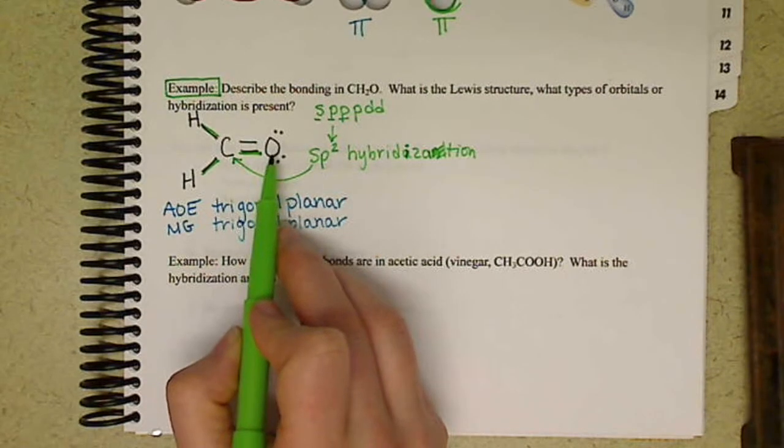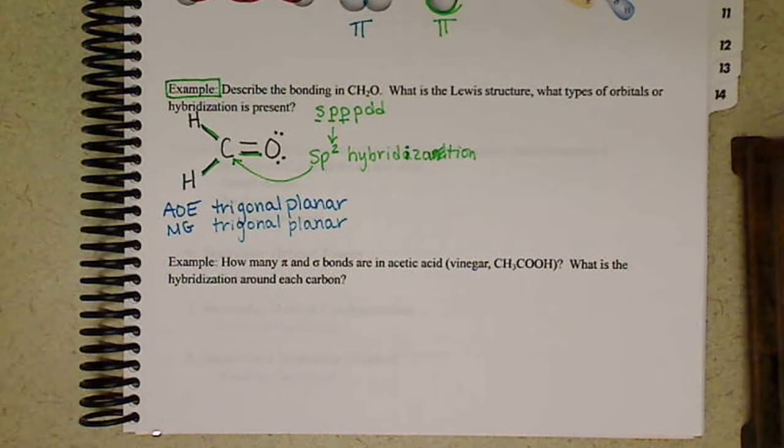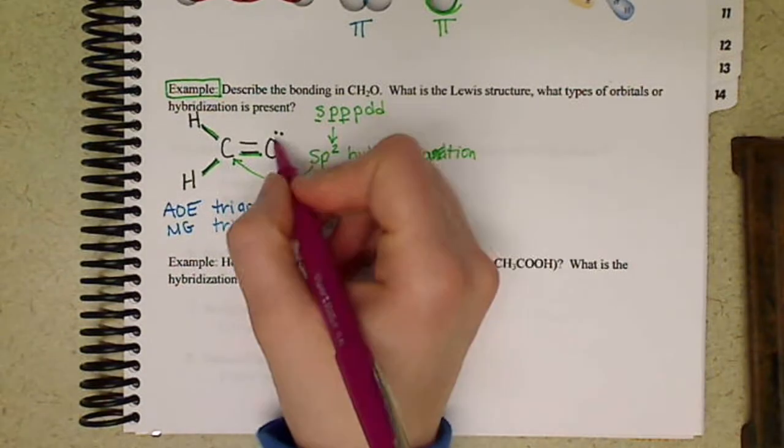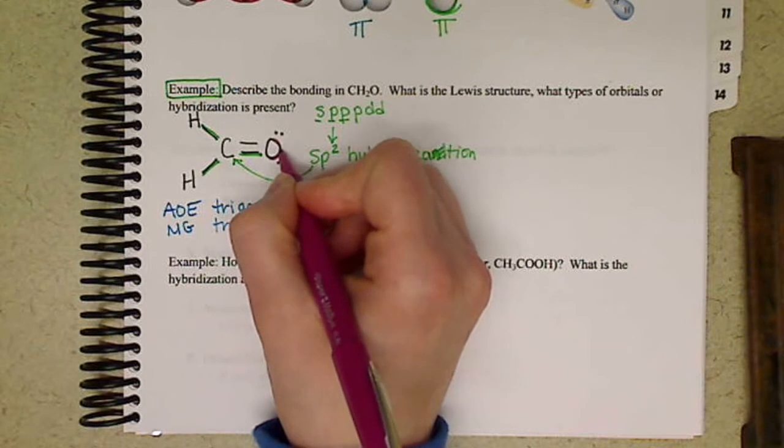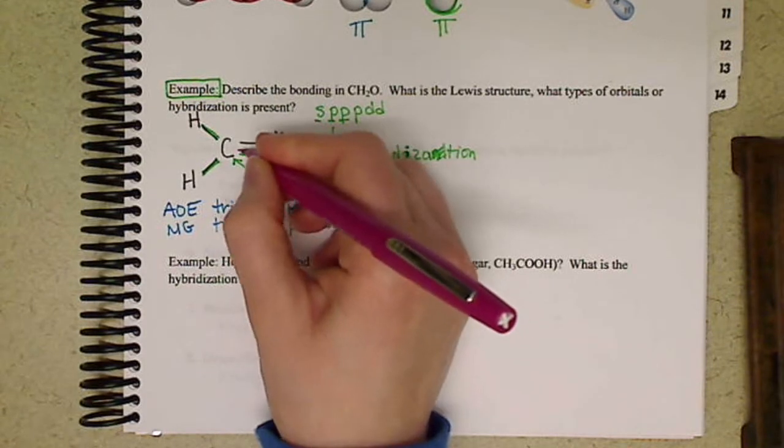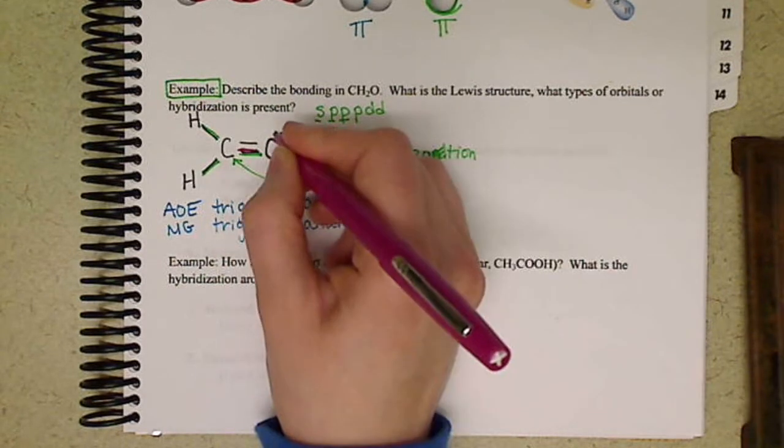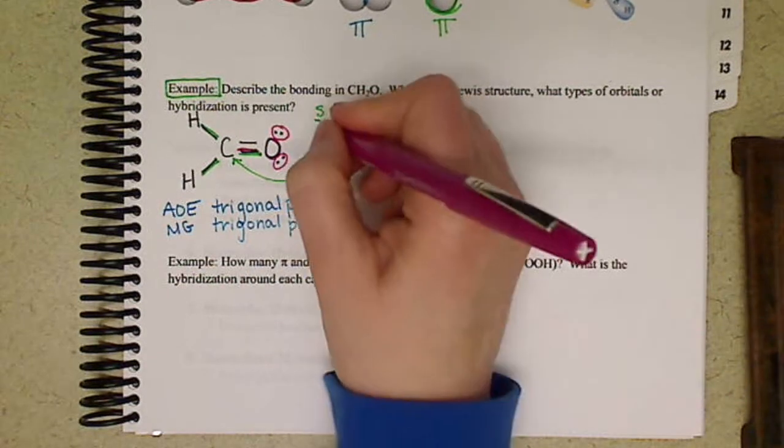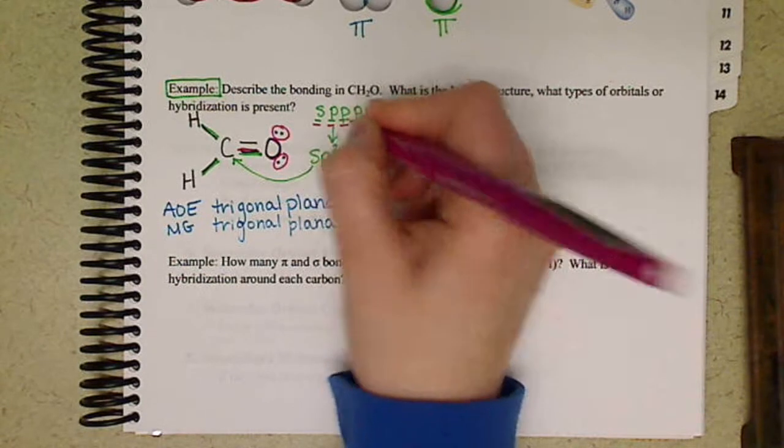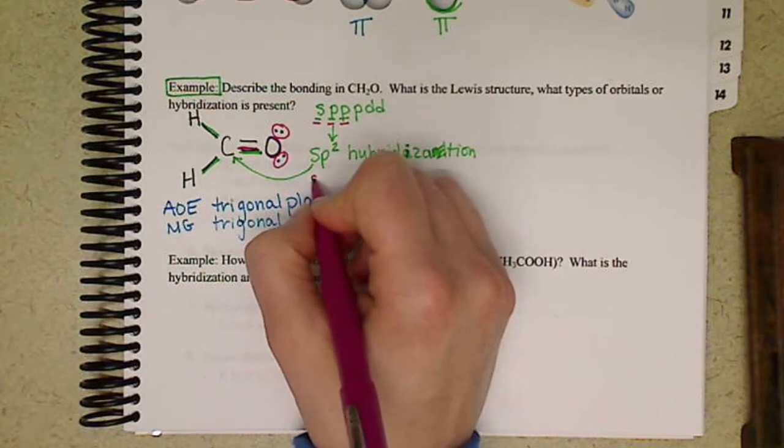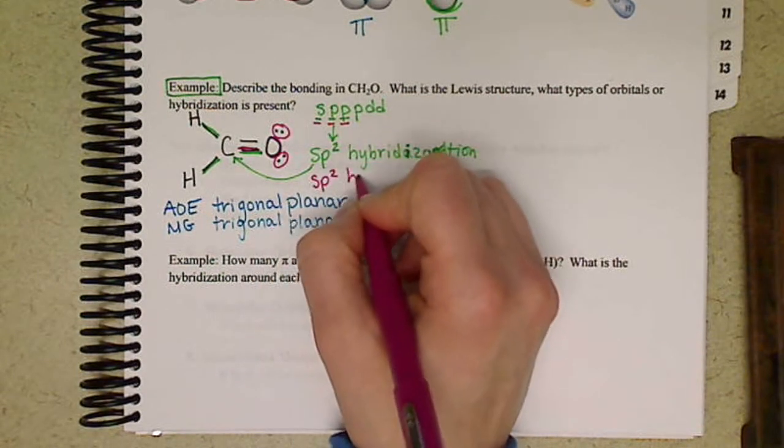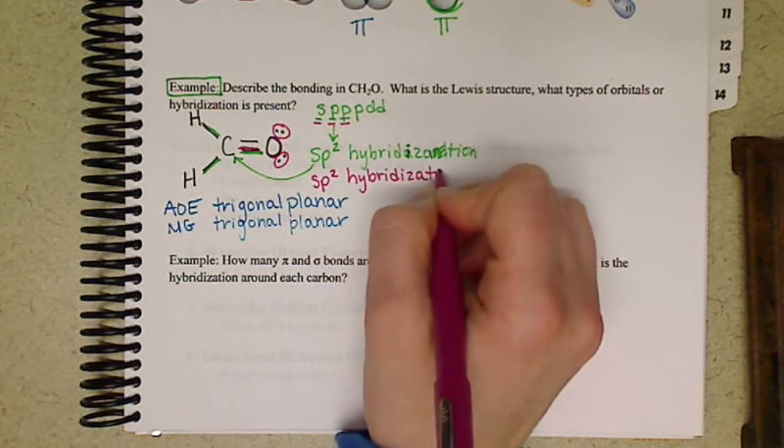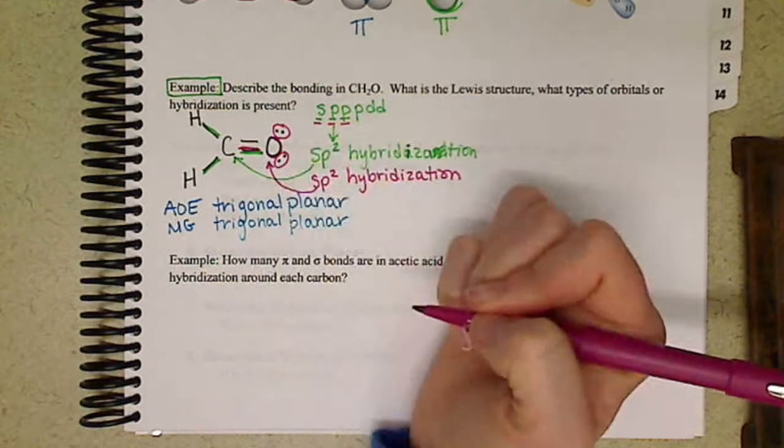Oxygen is also hybridized. I'll show it in a different color, pink. If we look at our oxygen here, it has one area, two areas, and three areas of electrons. So we would have one, two, three. So we still have sp2 hybridization on the oxygen atom.